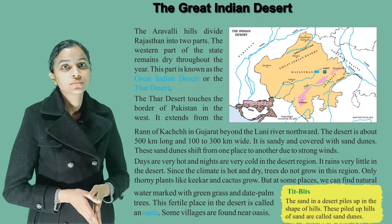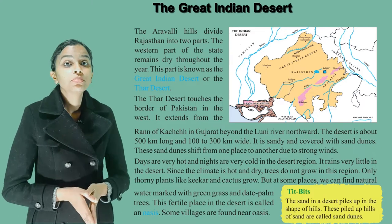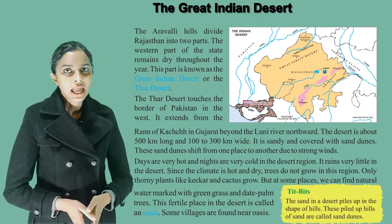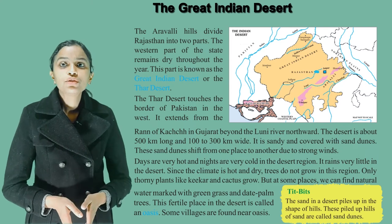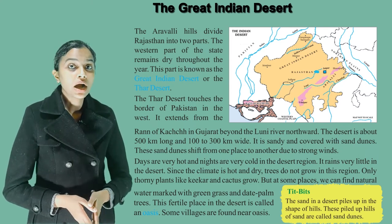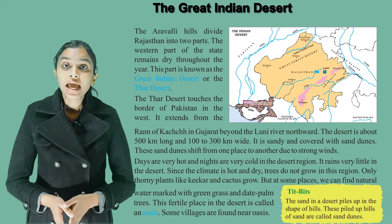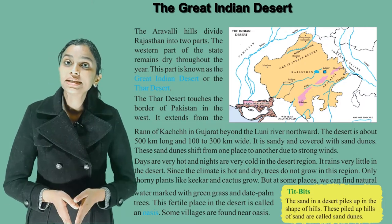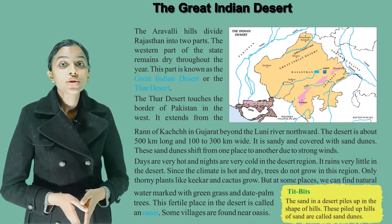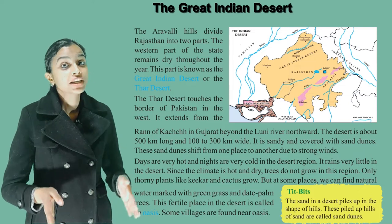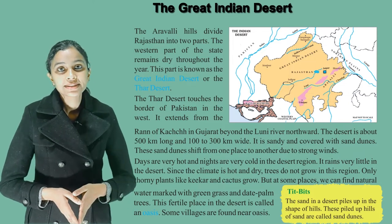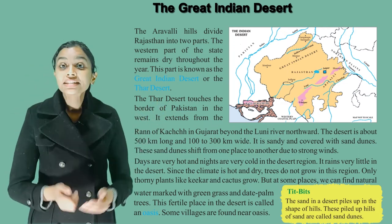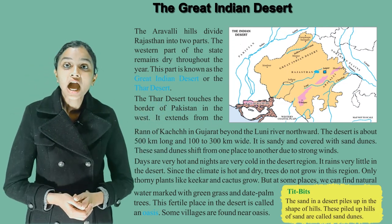It rains very little in the desert. Since the climate is hot and dry, trees do not grow in this region. Only thorny plants like khejri and cactus grow. But at some places we can find natural water marked with green grass and date palm trees. This fertile place in the desert is called an oasis. Some villages are found near oases.